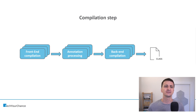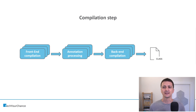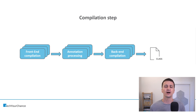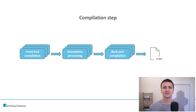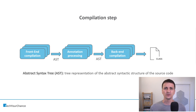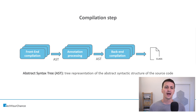Annotation processing basically happens between the front-end and the back-end of the compilation step. One very interesting question is: what kind of format is used to pass data from the front-end compilation step to annotation processing, and from annotation processing further to back-end compilation? The answer is that abstract syntax tree data structures — AST in short — are used to pass data between these steps. ASTs are tree representations of the abstract syntactic structure of the source code.